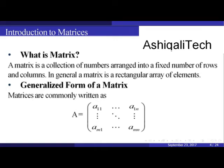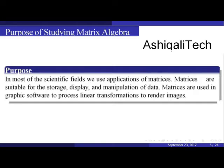In general, a matrix is a rectangular array of elements. The generalized form of a matrix is commonly written as A = [a11, a12, ... a1n], and similarly in the first column starting from a11 up to am1. Matrices are used in most scientific fields for the storage, display, and manipulation of data.